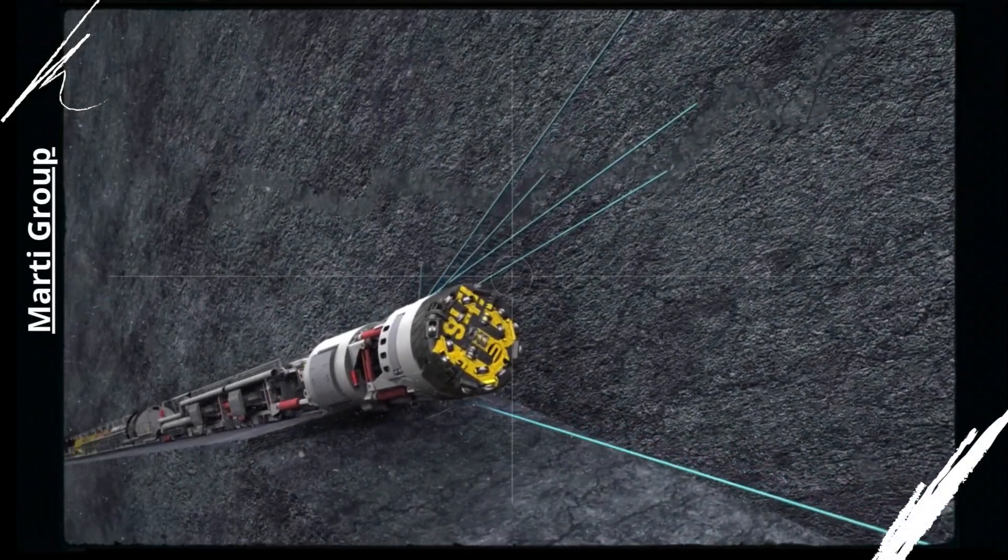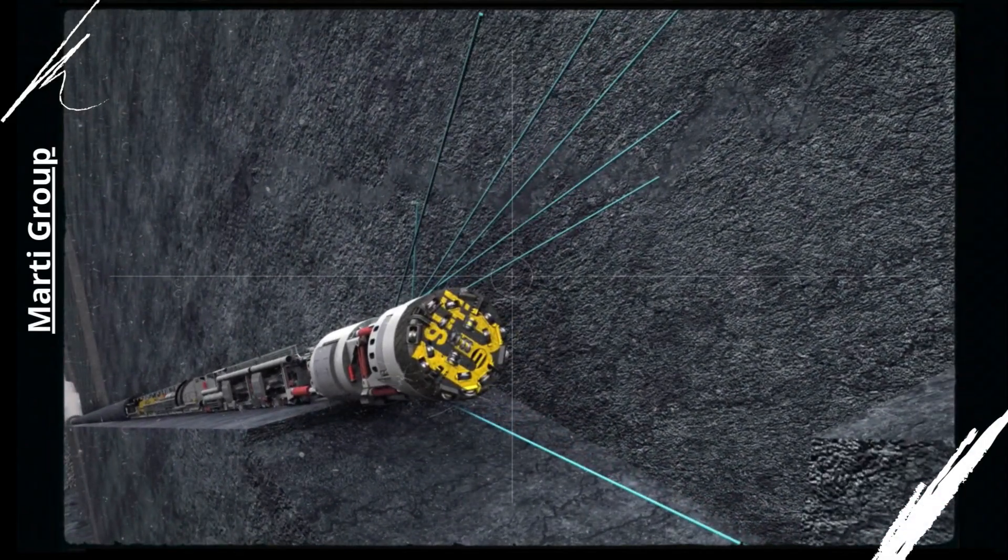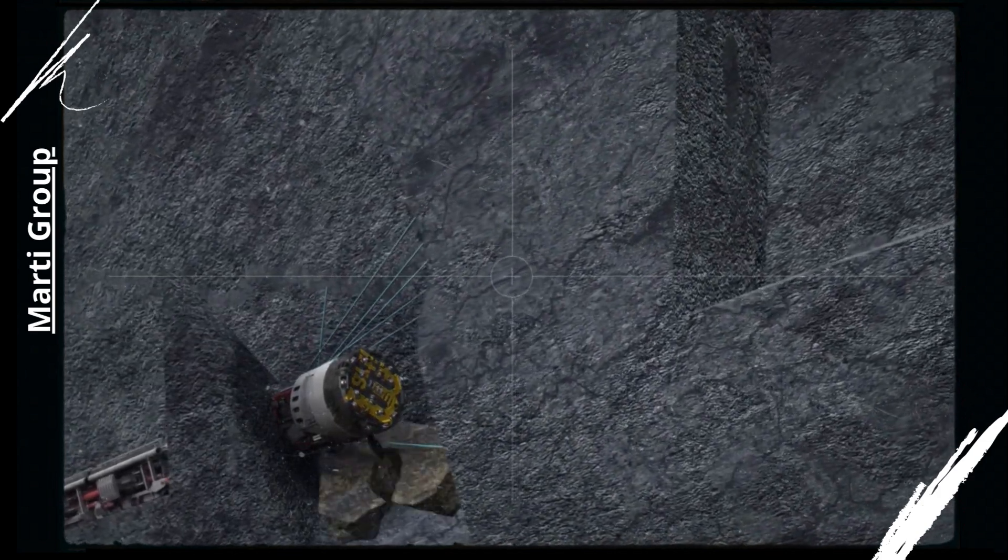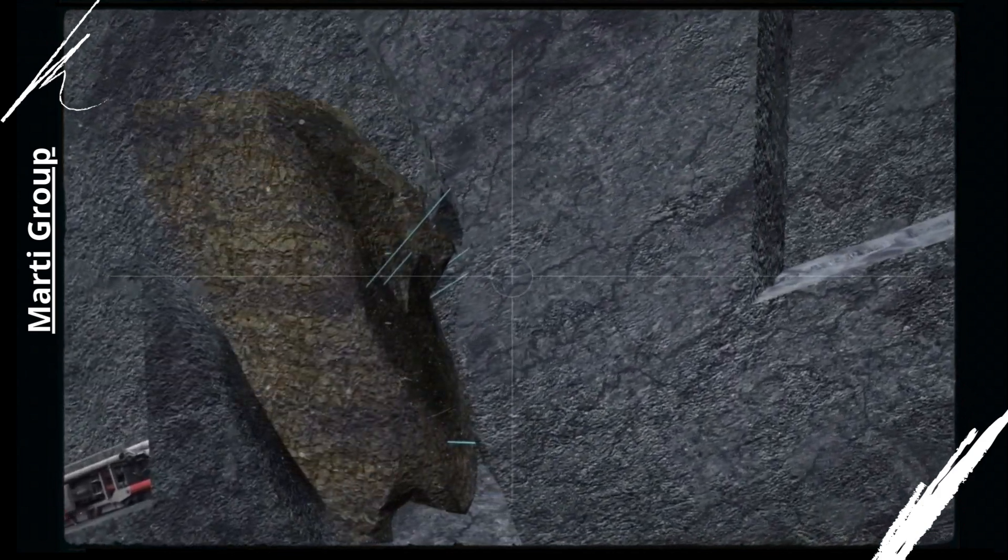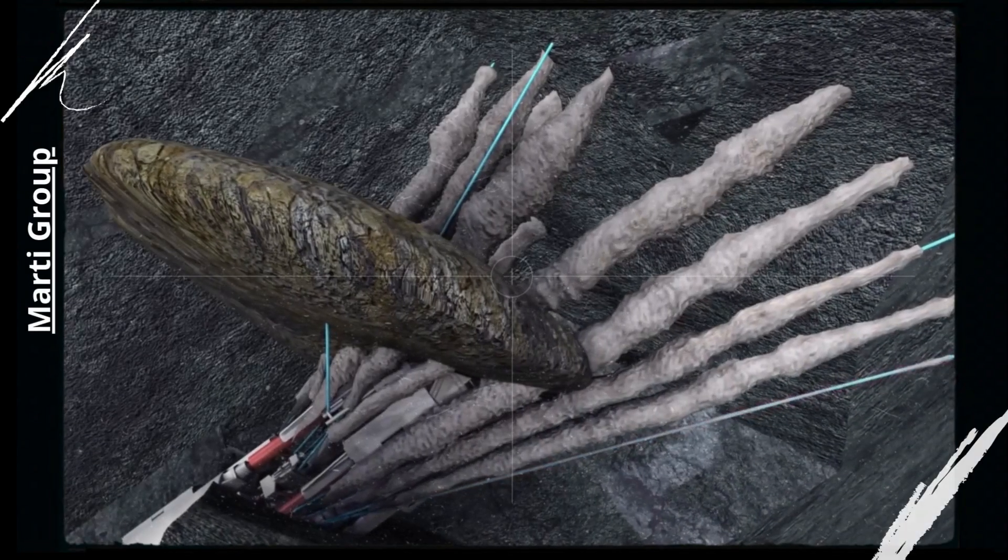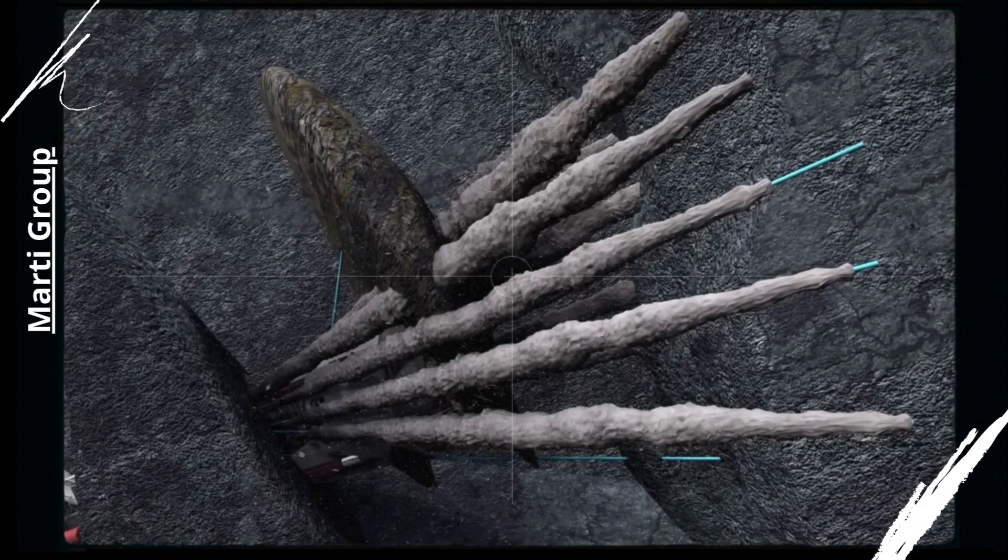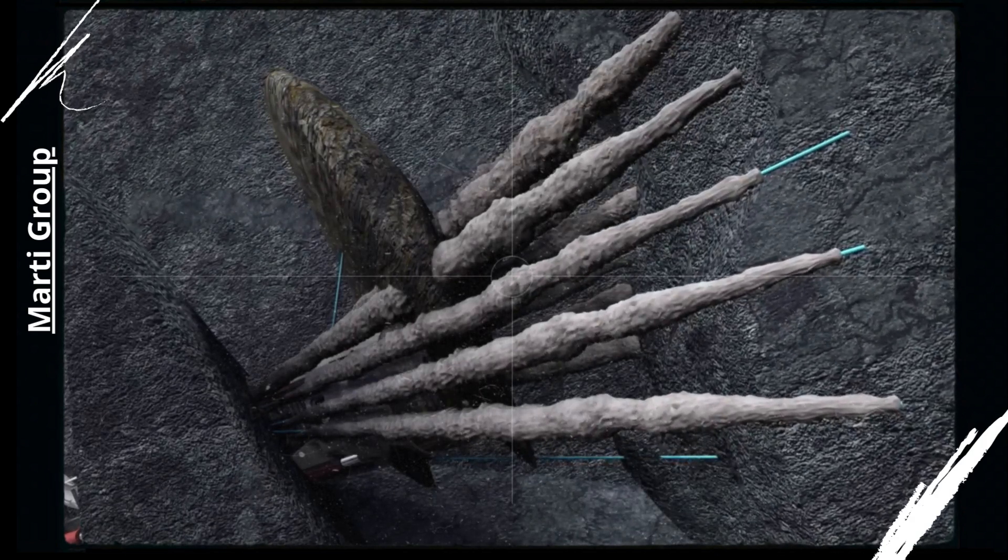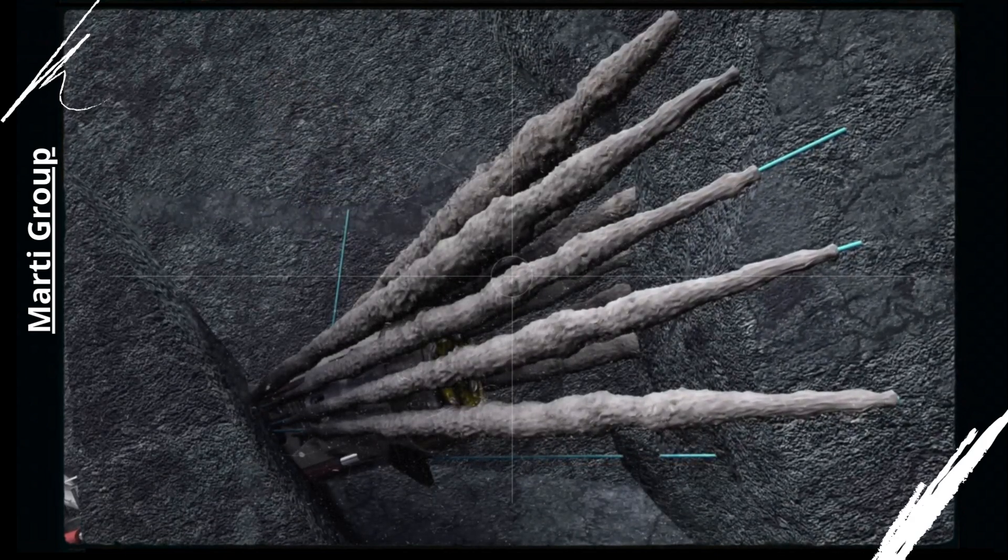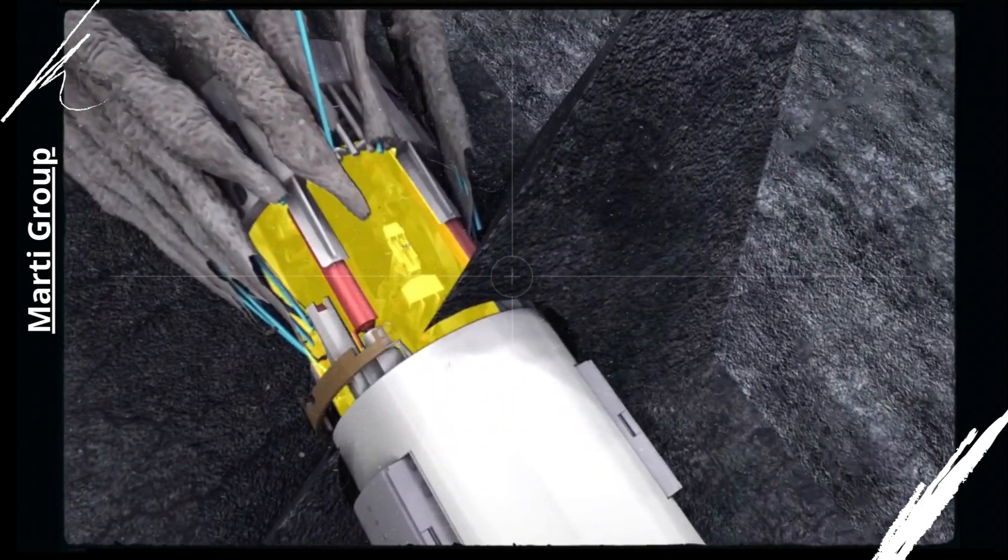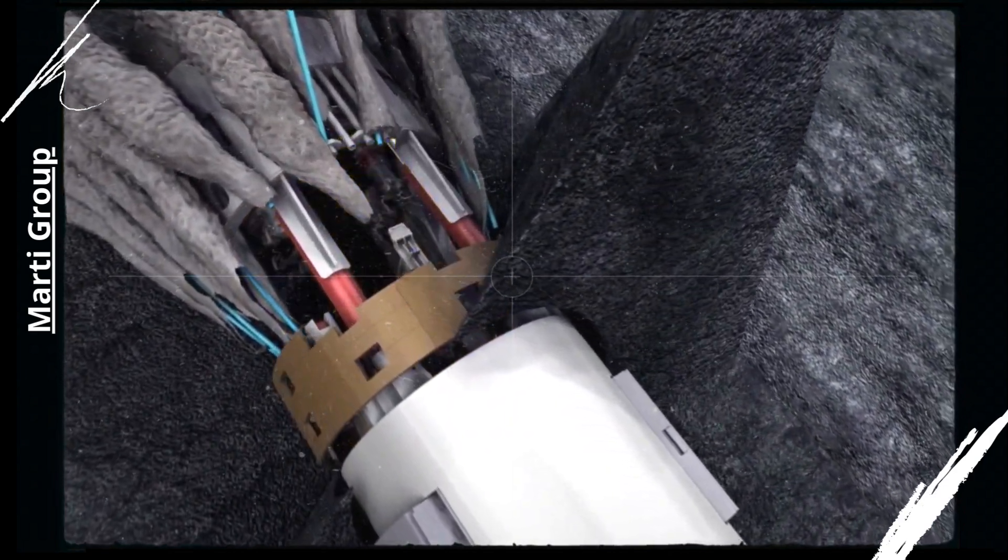Marti TBMs are also notable for their ability to construct tunnels in areas with high water tables or weak soil conditions. Their design allows for the use of pressurized faces, slurry or EPB (which stands for Earth Pressure Balance), which keeps the tunnel face stable during excavation and prevents collapses or groundwater inflow.